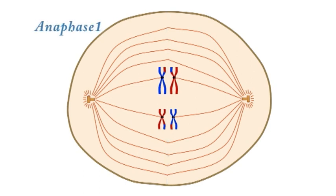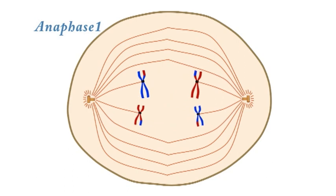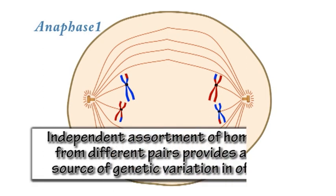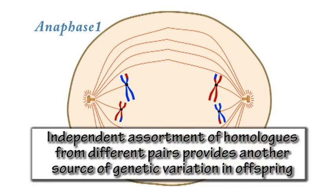In anaphase 1, homologous chromosomes are pulled apart with one homolog of each pair moving towards one end of the cell and the other homolog moving towards the opposite end of the cell.